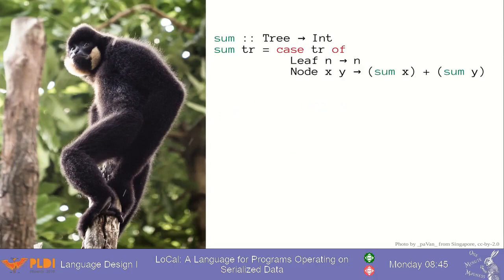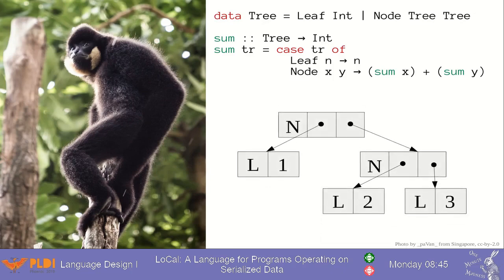Here's a simple recursive function that sums the leaves of a binary tree. The in-memory representation you'd expect would be something like this, where the nodes have pointers to their children.